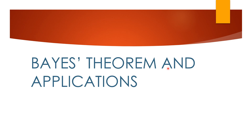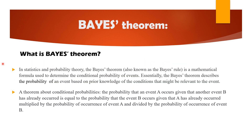Bayes theorem and its applications. In statistics and probability, Bayes theorem — also known as Bayes rule — is a mathematical formula used to determine the conditional probability of an event. Essentially, Bayes theorem describes the probability of an event based upon prior knowledge of conditions that might be relevant to the event.